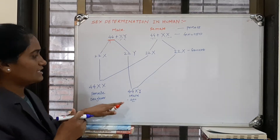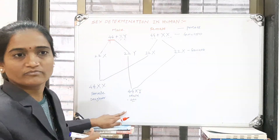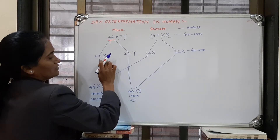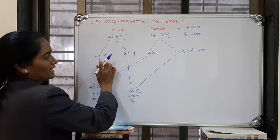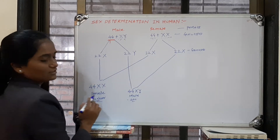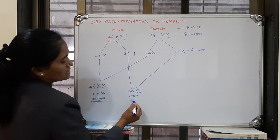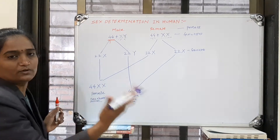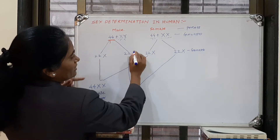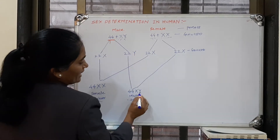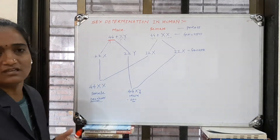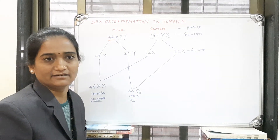So how are a daughter and son produced? A daughter is produced by the crossing of the X chromosome from the male with the X chromosome from the female. A son is produced when the Y chromosome from the male combines with the X chromosome from the female.